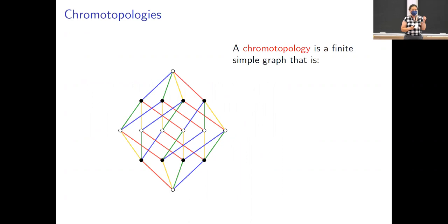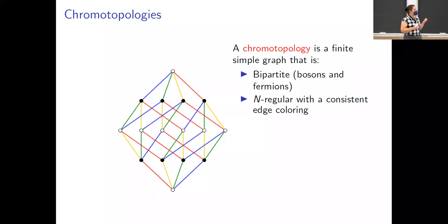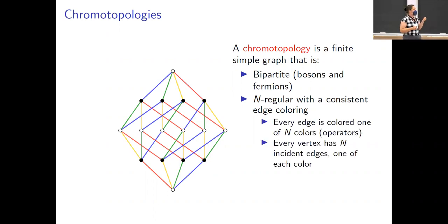So let's try to combinatorialize this. We're going to make a thing called a chromo-topology, chromo for color. It's a finite, simple graph. We're going to make a bipartite graph. In other words, we'll have half our vertices be bosons and our other half be fermions. We're going to assume that it is n-regular. So every single boson or fermion is going to have n different edges coming out of it, and they're going to be colored one of our n possible colors. We think of those colors as corresponding to the operator. So you think of moving along one of these edges as transforming boson to fermion or fermion to boson.